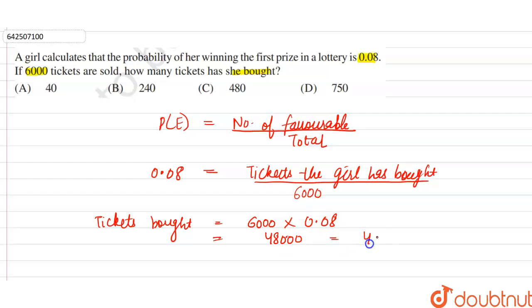So, this is equal to 480. So, number of tickets that the girl has bought is 480. So, option C will be the correct option.